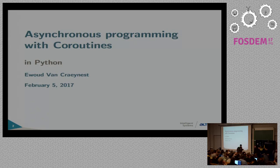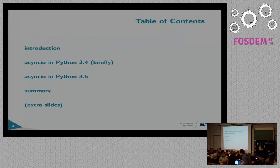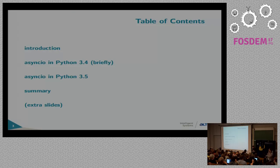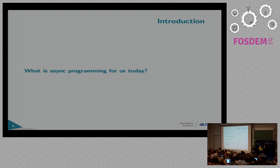I got into AsyncIO not too long ago and wanted to share it with my colleagues, and thought it might be interesting to present here at FOSDEM today. I have a small introduction covering Python 3.4, which is in the past, then Python 3.5. I haven't updated to 3.6 yet but not a lot has changed. Then a small summary and, if we have time, some extra slides — I do have a fairly large slide deck.